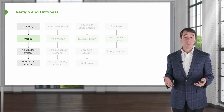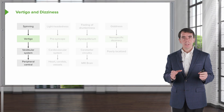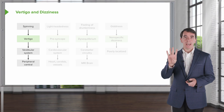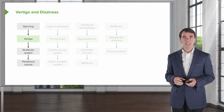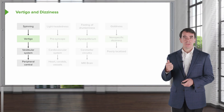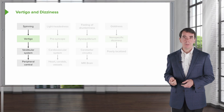When we approach patients and clinical vignettes, we can break these myriad descriptions down into four categories. We're looking to figure out whether the patient is describing vertigo, syncope or presyncope, disequilibrium, or nonspecific dizziness.